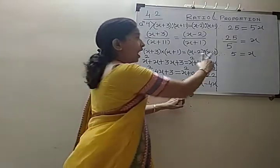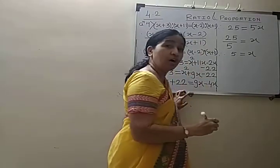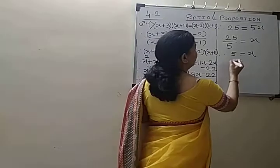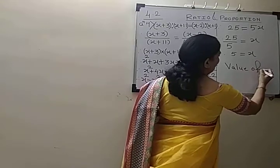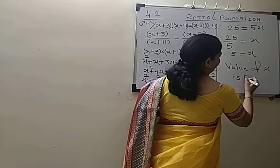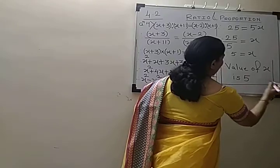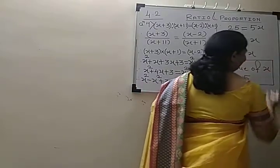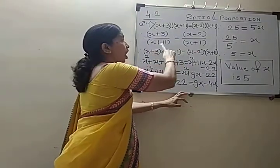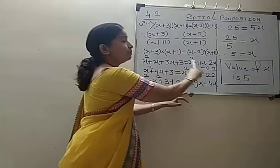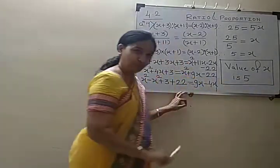You have to write the answer in words. So we will write: value of x is 5. And without fail, we will make a bracket around the answer. So in this way, by taking cross multiplication, we find out the value of x, which we got as 5.